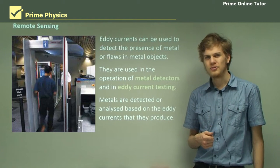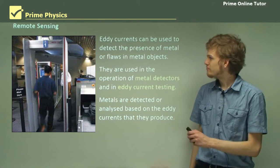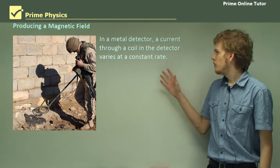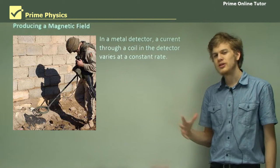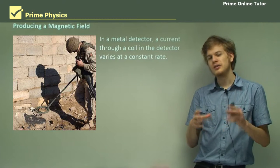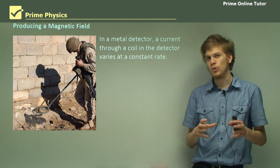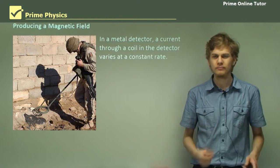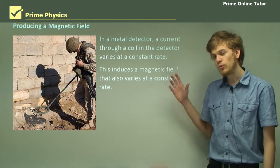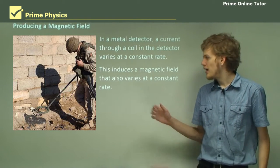So how do we manage that? In a metal detector, we run a current through a coil in the detector that varies at a constant rate. We have an alternating electric current. This induces a changing magnetic field which also varies back and forth at a constant rate.